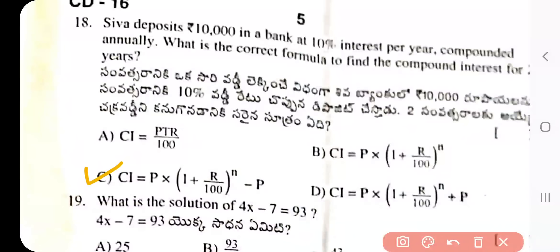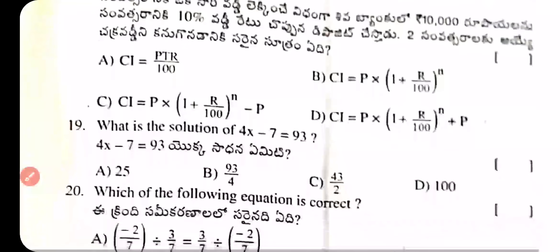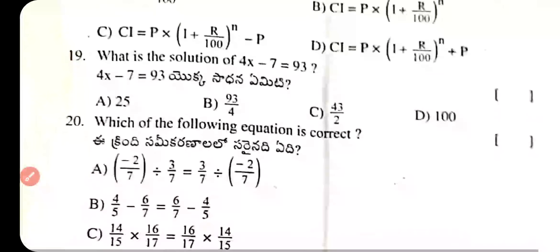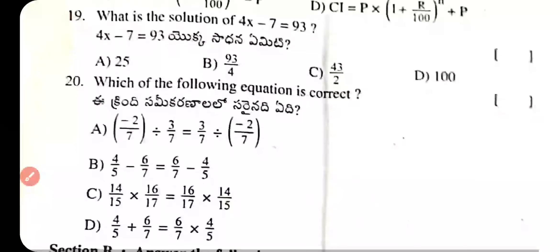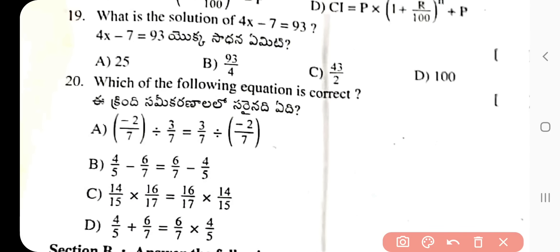Question 19: What is the solution of 4x − 7 = 93? The answer is x = 25.